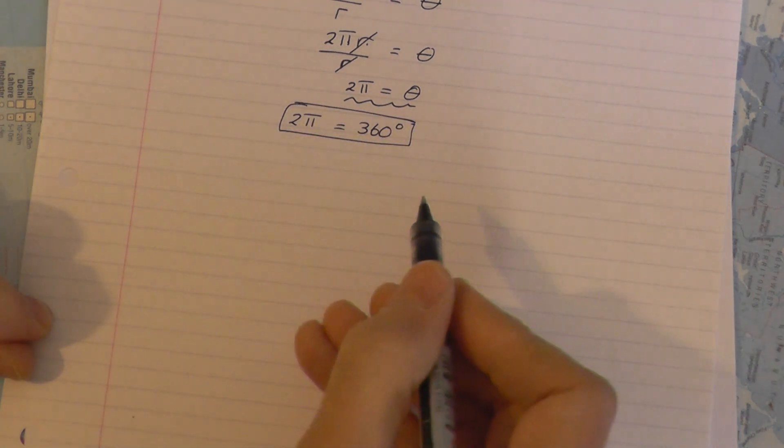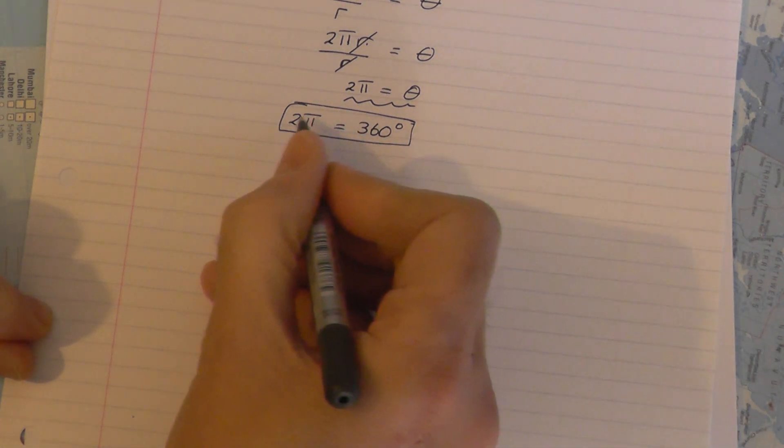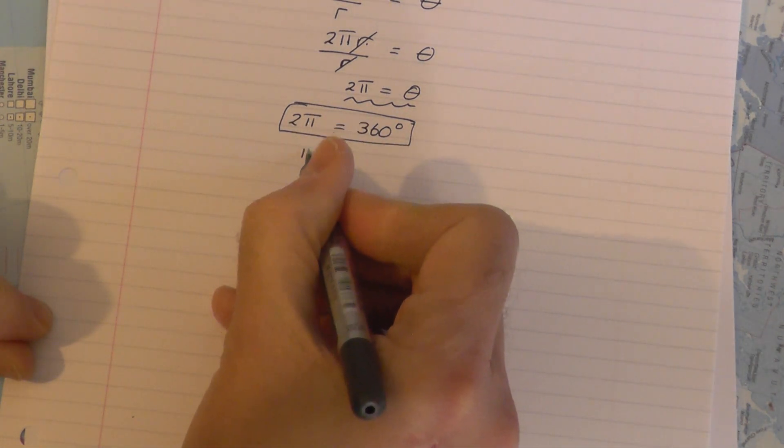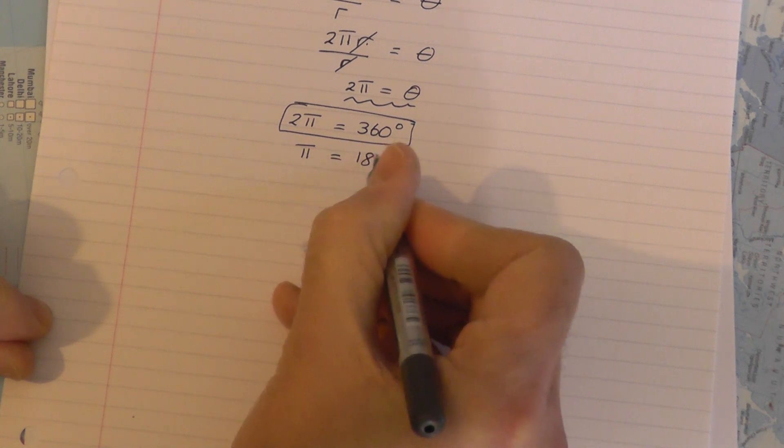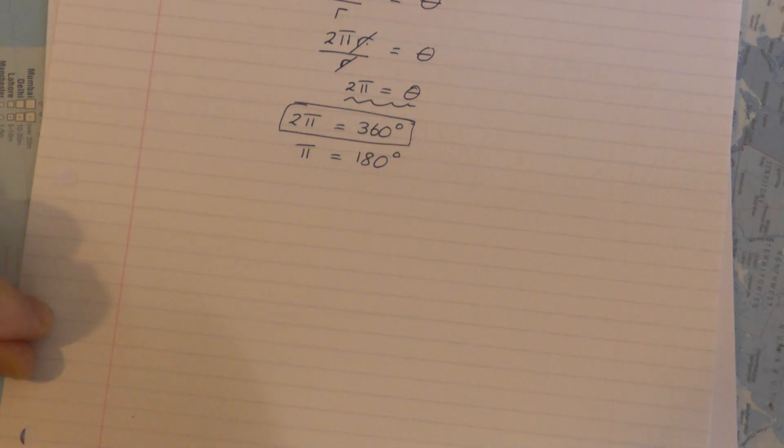Now you need to adapt this to remember certain other key angles. If you divide this by 2 you get π rads is the same as divide by 2, 180 degrees. You need to know that.